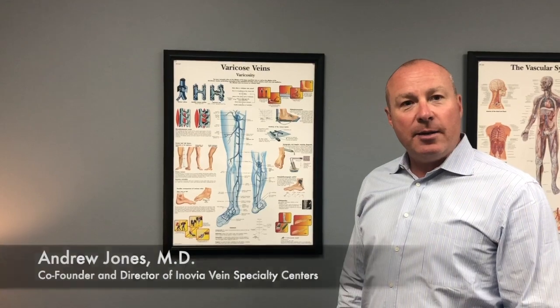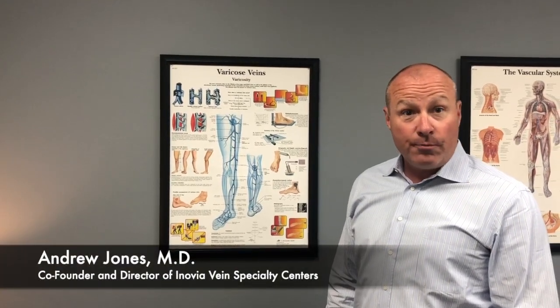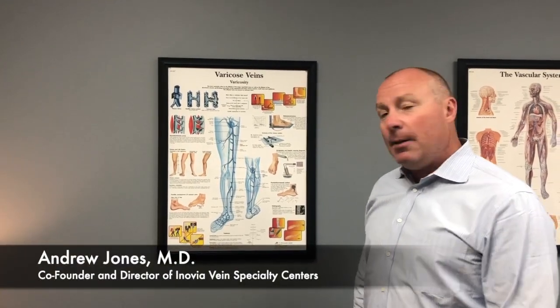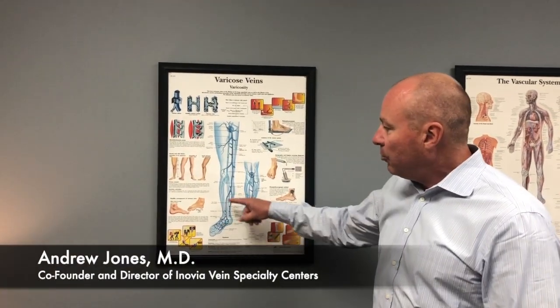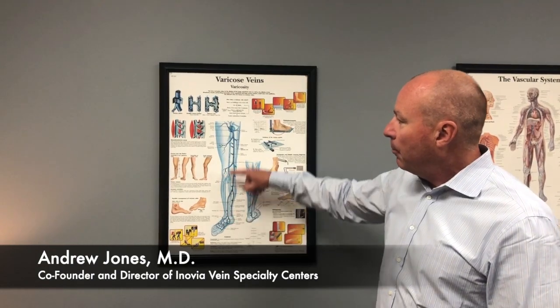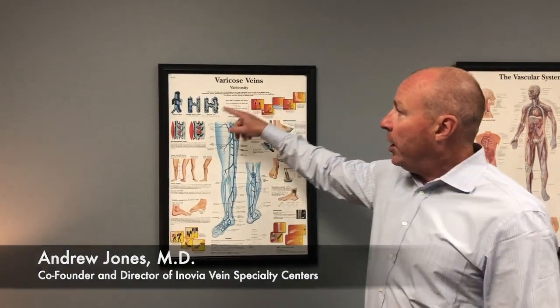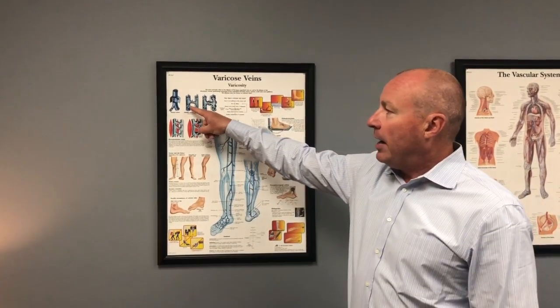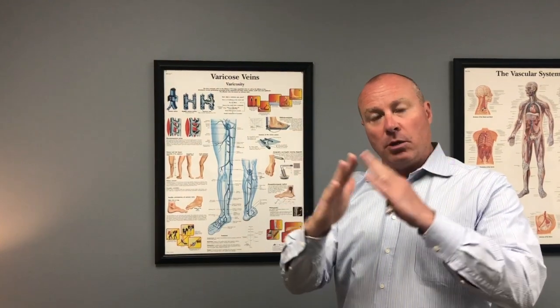We're going to talk today about varicose veins and why they occur. The job of veins is to bring the deoxygenated blood from the leg back to the heart and lungs. The way veins work is by having valves that open and close to keep blood going in one direction.